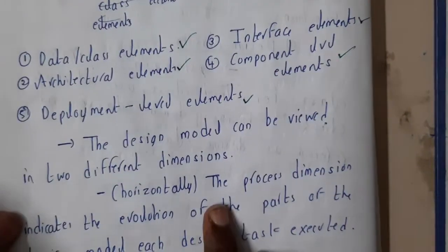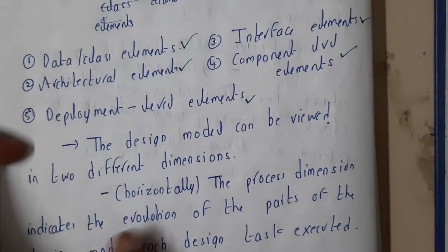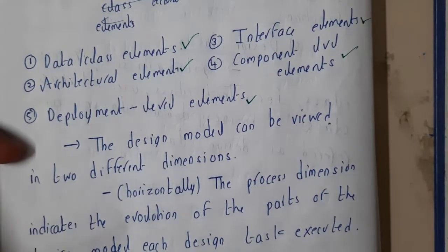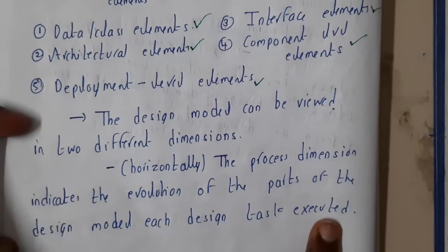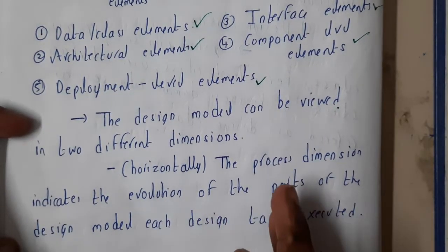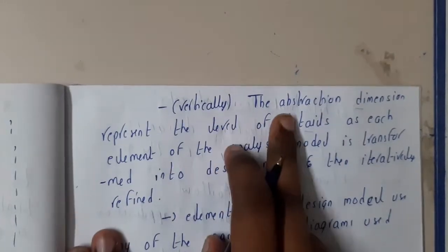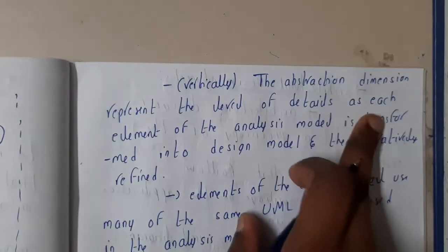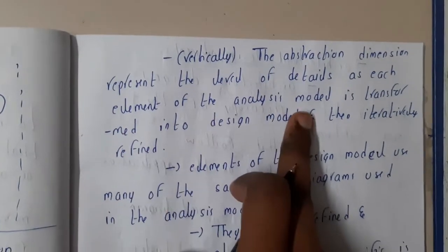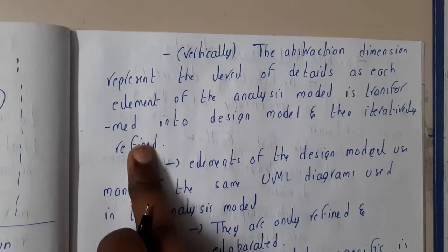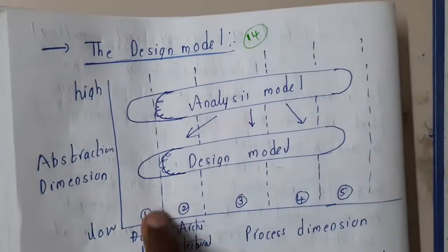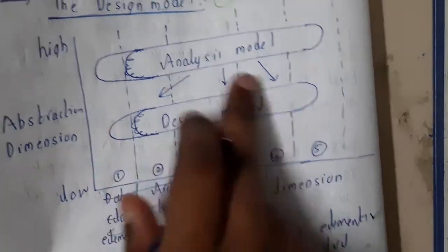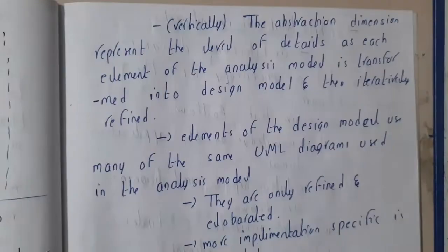First, the process dimension (horizontal) indicates the evolution of parts of the design model as each design task is executed. Similarly, the abstraction dimension (vertical) represents the level of details as each element of the analysis model is transformed into design model and then iteratively refined. In vertical we will be getting step by step, whereas in horizontal we will be getting layer by layer.